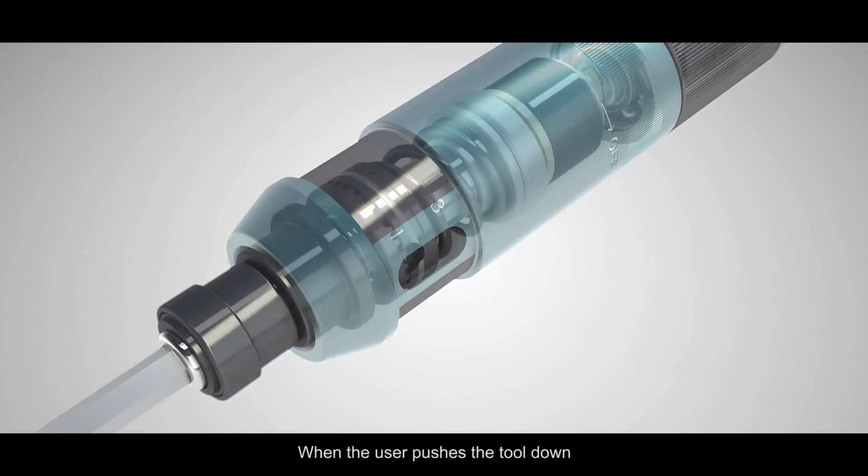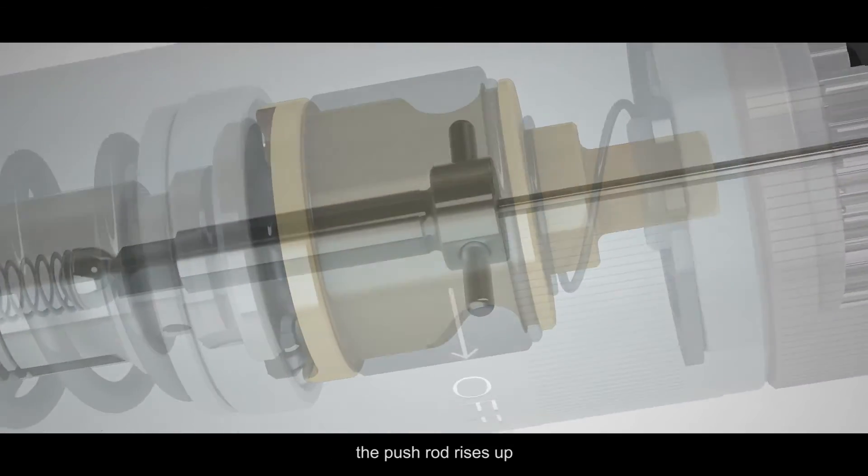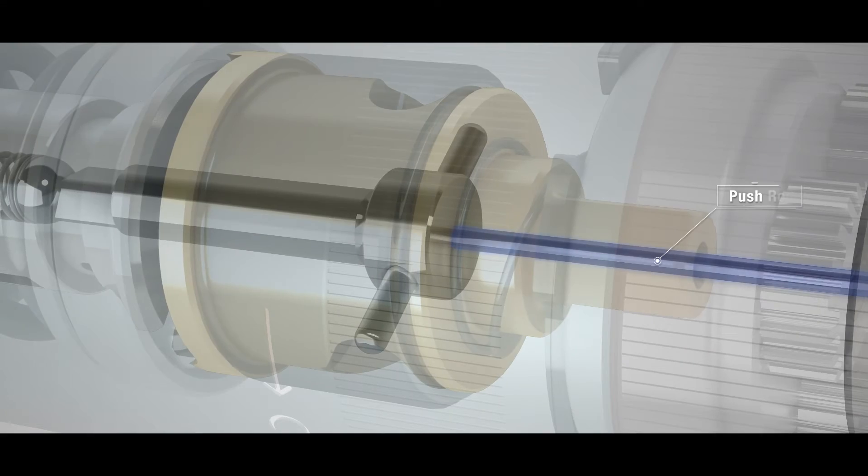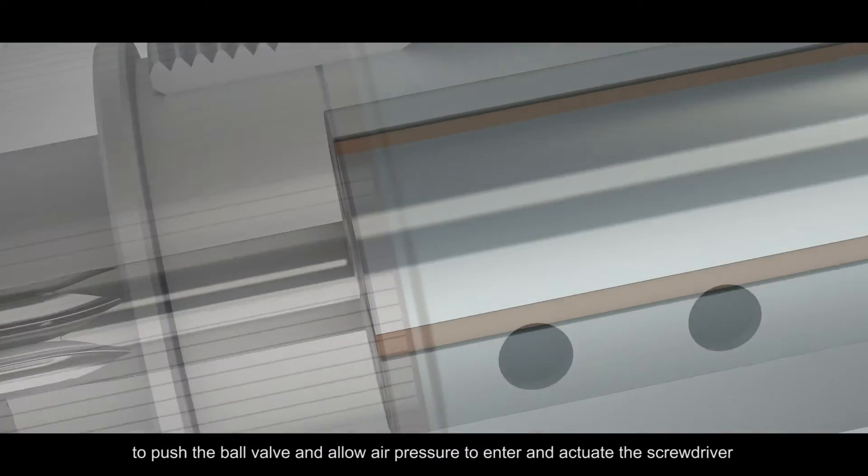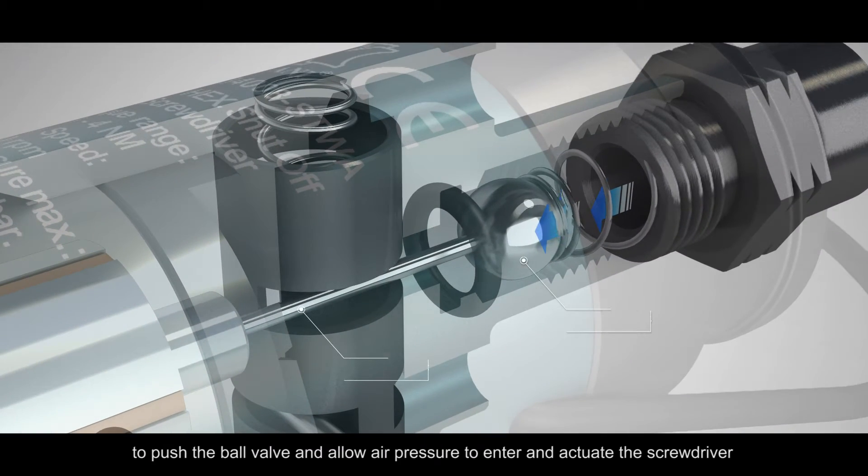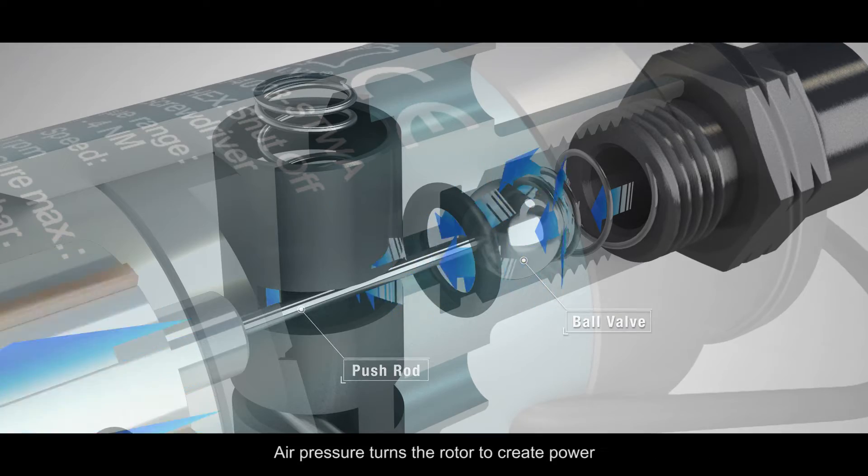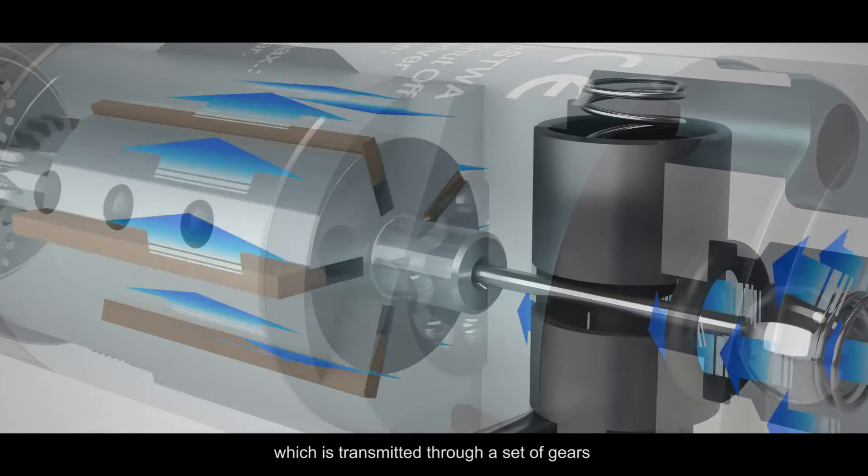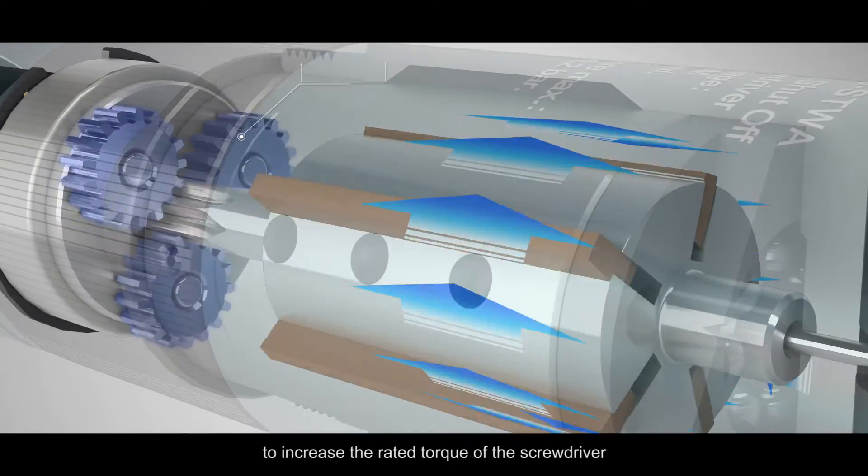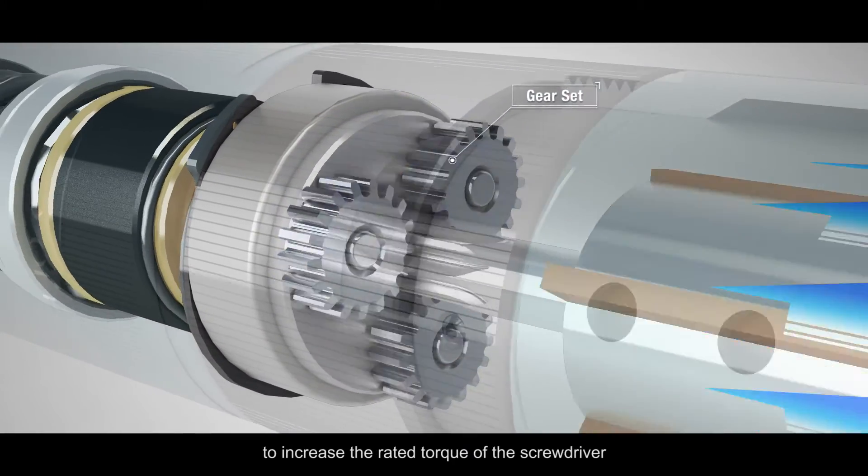When the user pushes the tool down, the pushrod rises up to push the ball valve and allow air pressure to enter and actuate the screwdriver. Air pressure turns the rotor to create power, which is transmitted through a set of gears to increase the rated torque of the screwdriver.